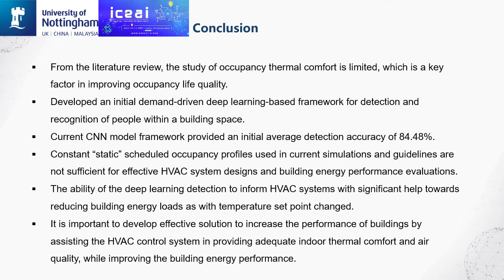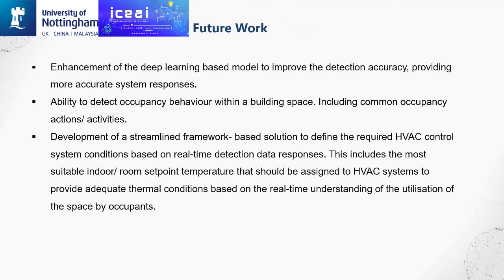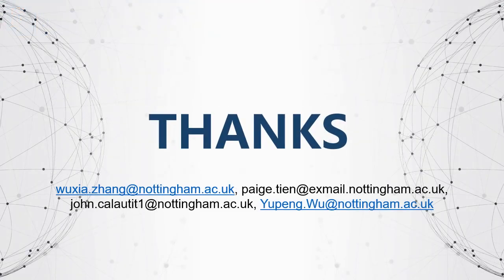Here are the conclusions of this paper. The study developed an initial demand-driven, deep learning-based framework for detection and organization of people within a building space, with an average detection accuracy of around 84%. Future work includes improving the deep learning model's detection accuracy to provide more accurate system responses, and extending recognition to more common occupancy actions and activities. Thank you for listening — please contact us via the listed email addresses if you have any questions.